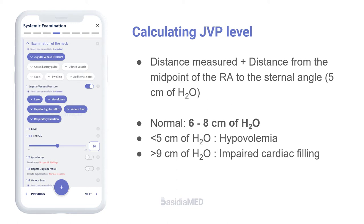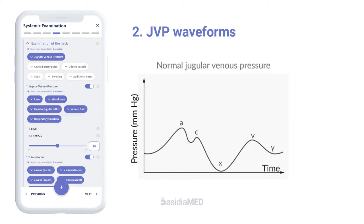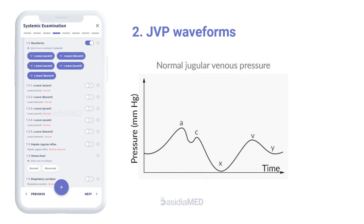If you cannot determine the JVP, report it as 'JVP not visualized' rather than 'no JVP,' which implies that the JVP was visualized and is not elevated. Some of the causes of raised JVP are: right ventricular failure, constrictive pericarditis, cardiac tamponade, tricuspid stenosis, superior vena cava obstruction, hyperkinetic circulatory state, increased blood volume, and renal failure.